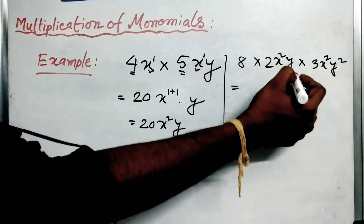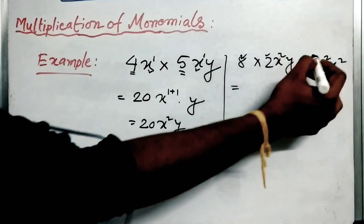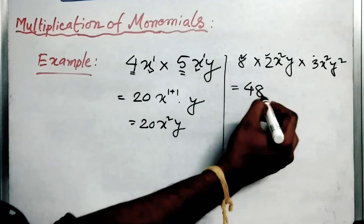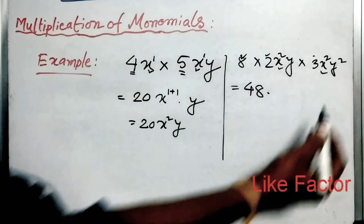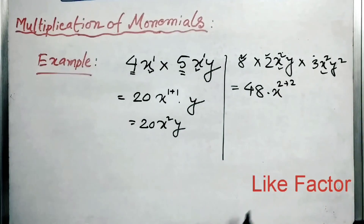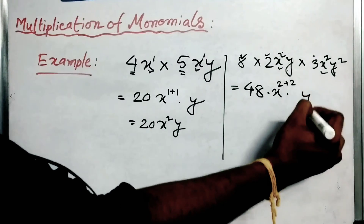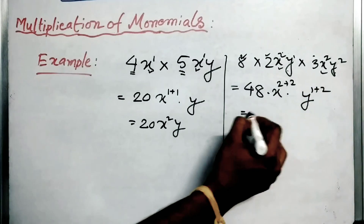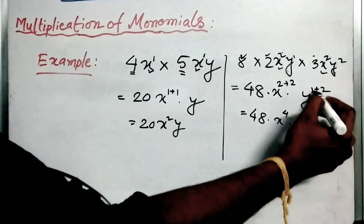Let's go for another example: 8 into 2x squared y into 3x squared y squared. First, the constant terms are multiplied: 8 into 2 is 16, and 16 into 3 is 48. Now the like term x: the powers are 2 and 2, so 2 plus 2. For y: the power is 1 and this is 2, so 1 plus 2. This gives 48x to the power 4 into y to the power 3.